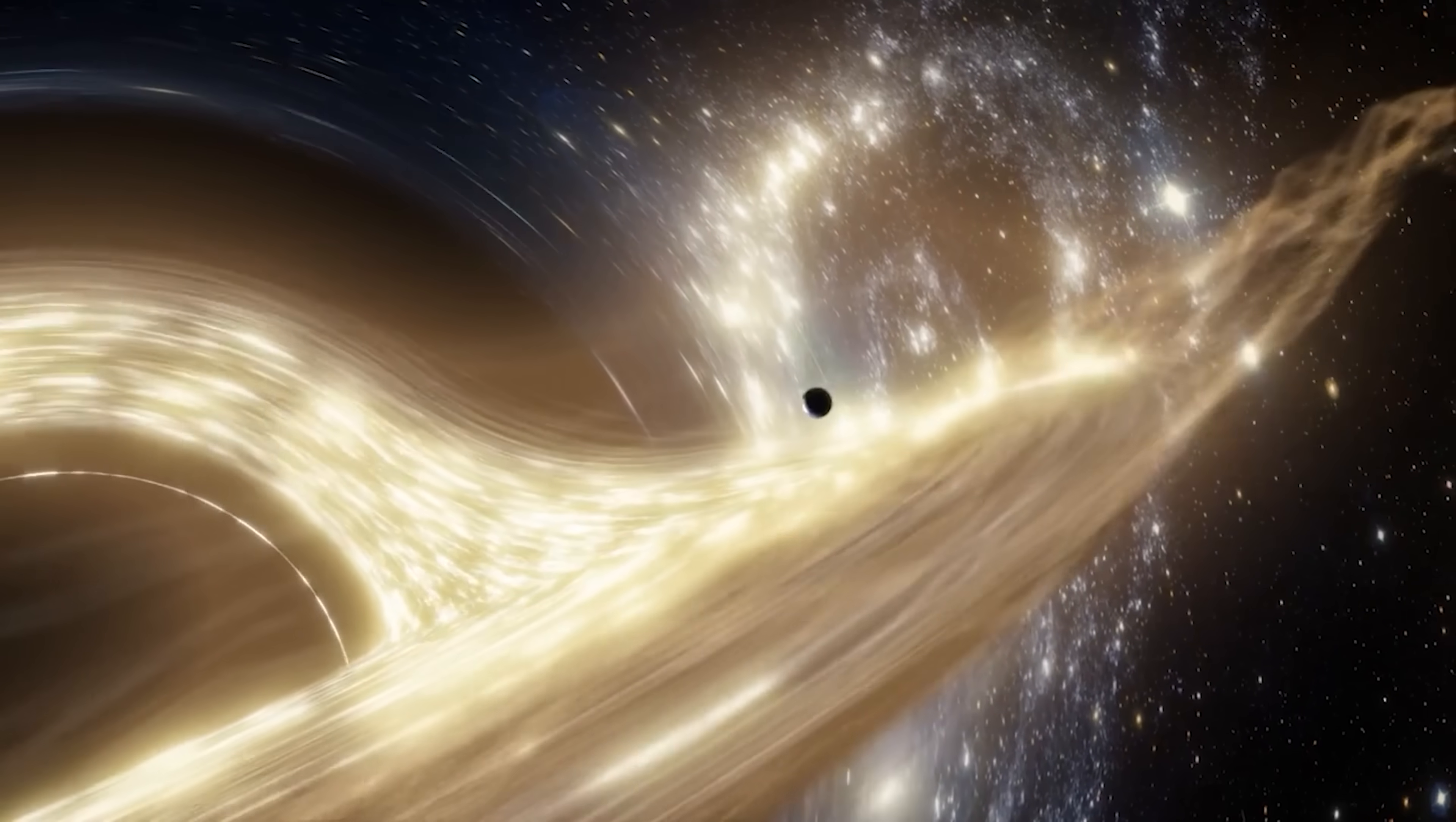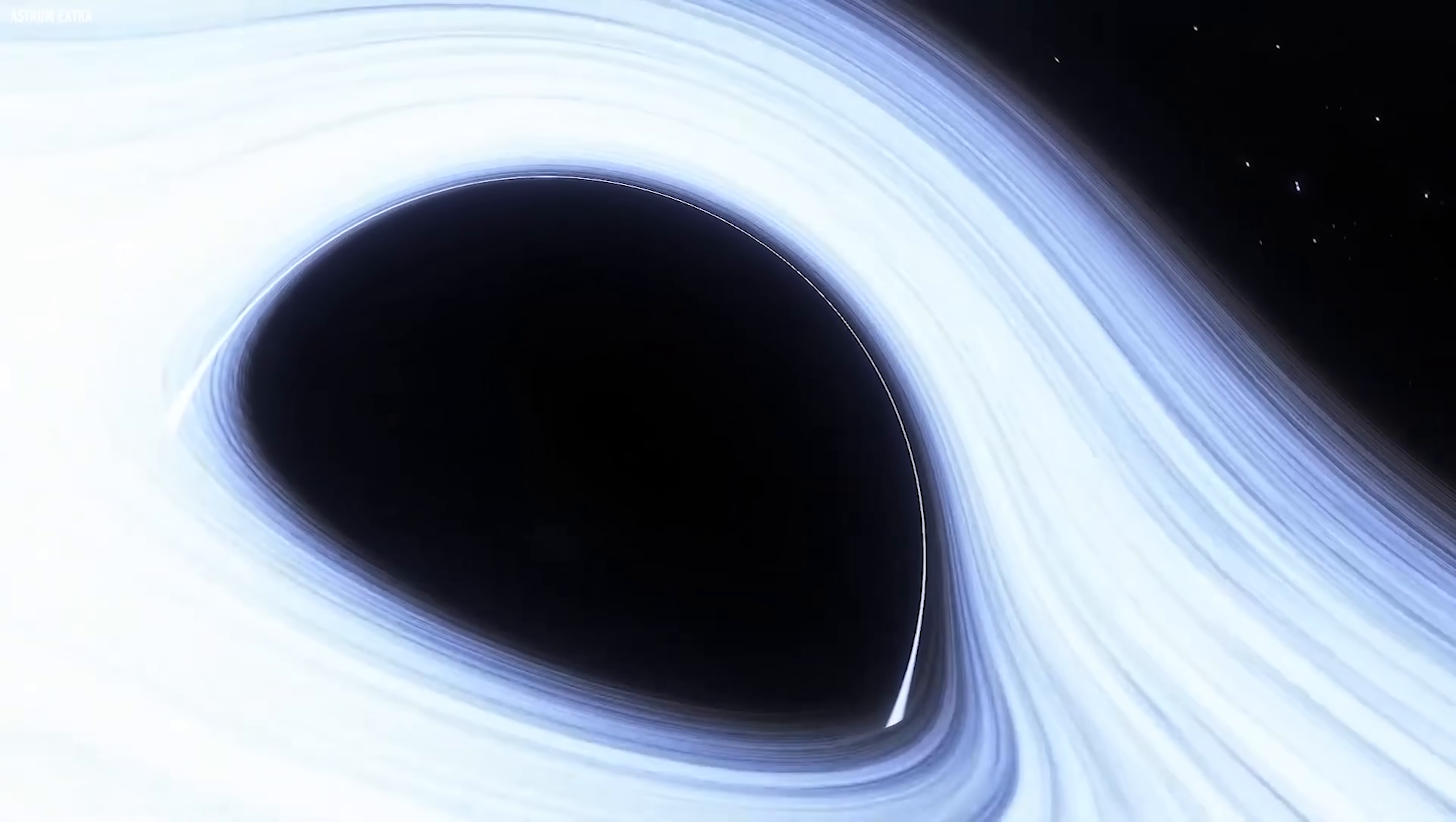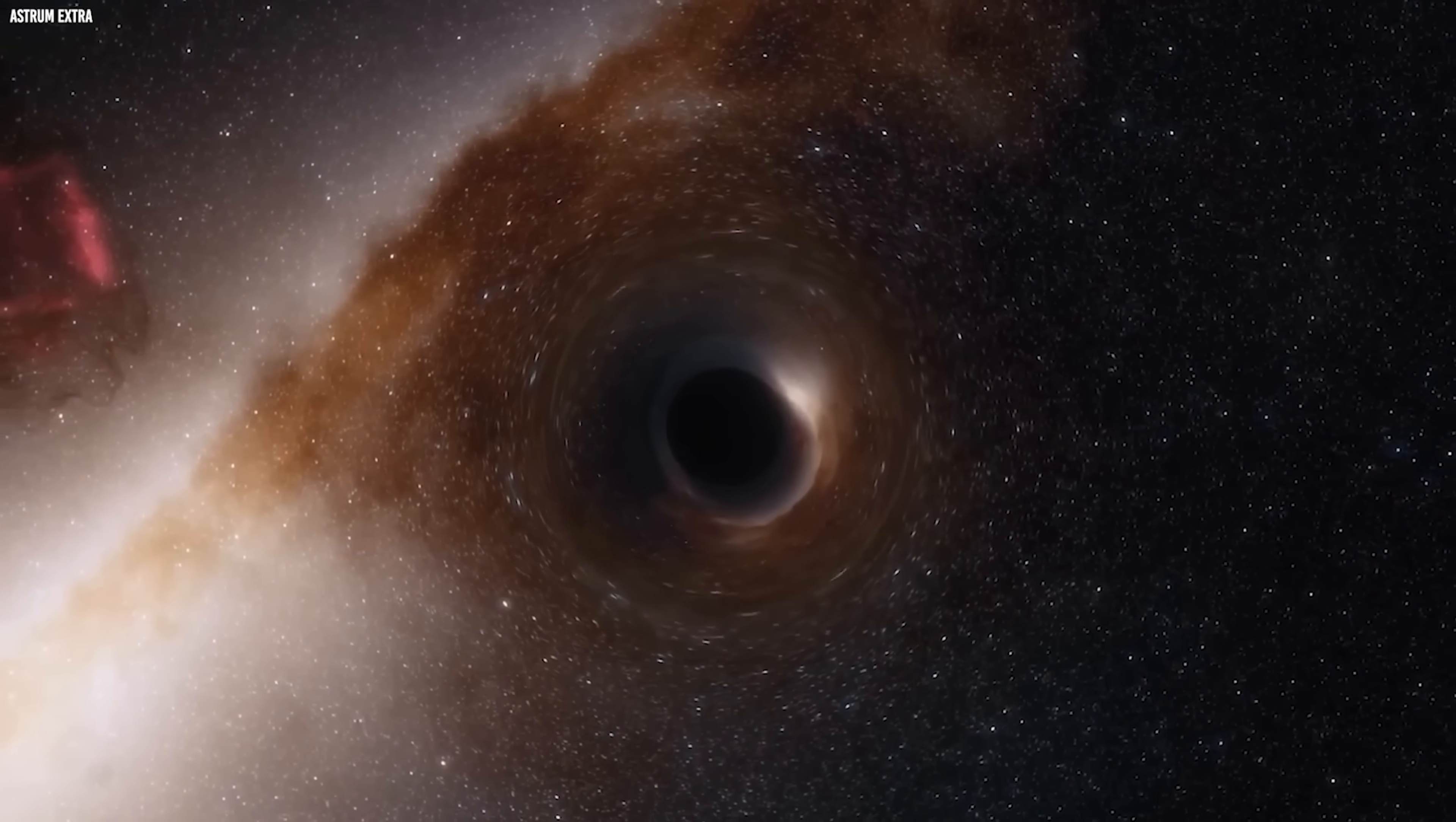This flips the traditional formation sequence on its head. Instead of supermassive black holes arising from galaxies, maybe galaxies were shaped, steered, and accelerated by the gravitational giants at their cores. In fact, some theories predict exactly that. Black holes as seeds around which galaxies condense.